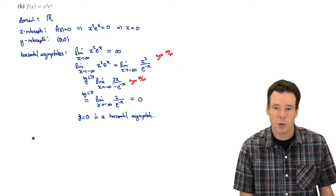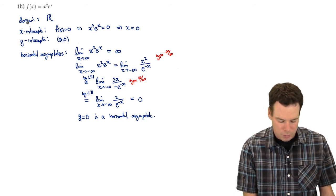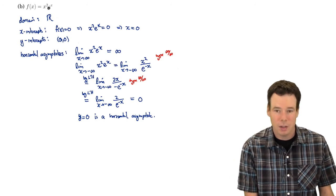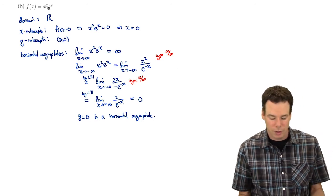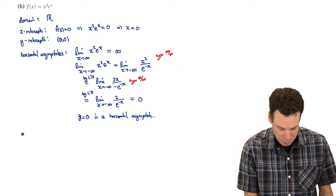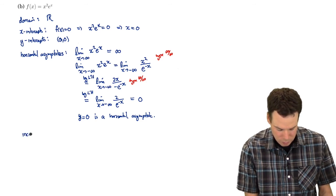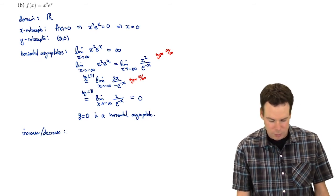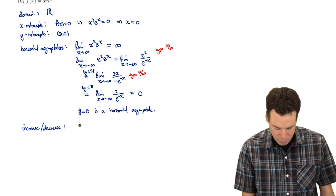Do we have any vertical asymptotes? No — the domain was all real numbers, every value can be plugged in, so there's no place where the function blows up. Now, what about intervals of increase and decrease? Those are determined by where the derivative is positive or negative.